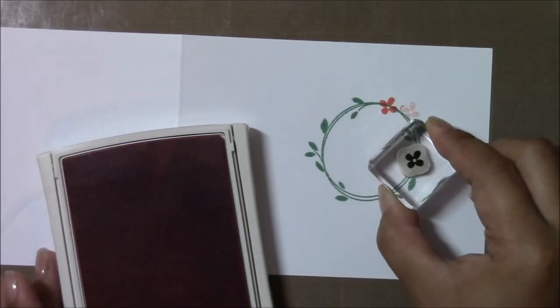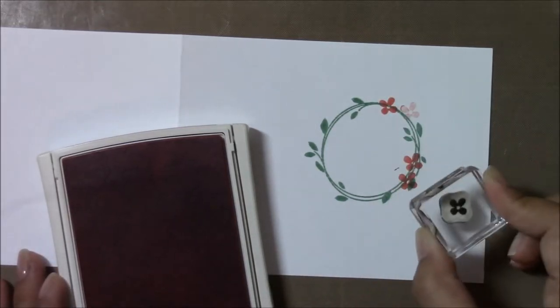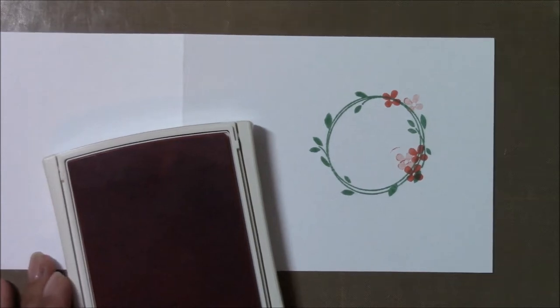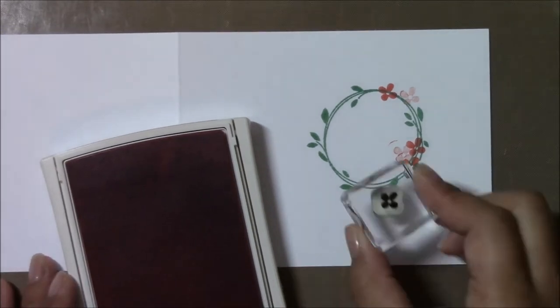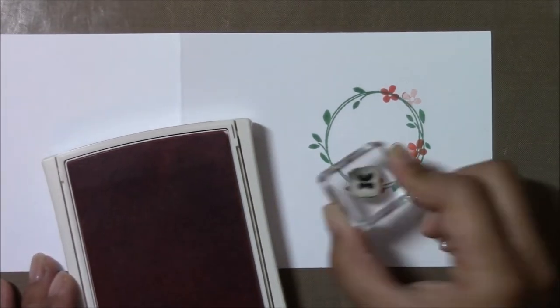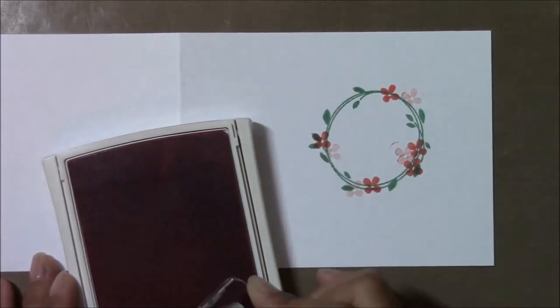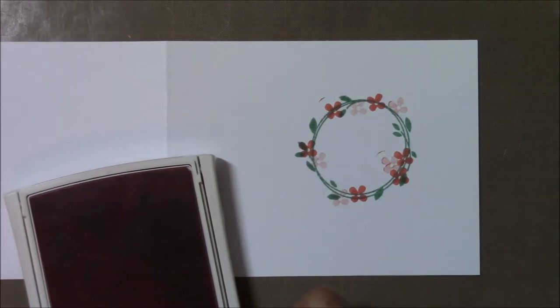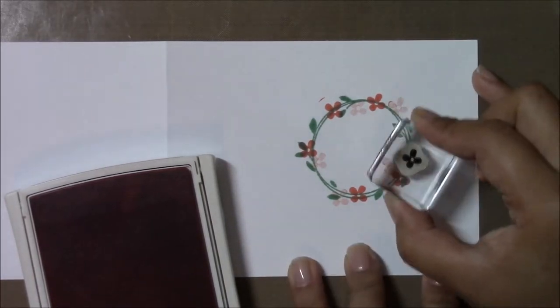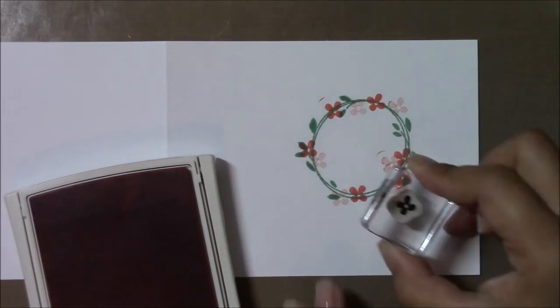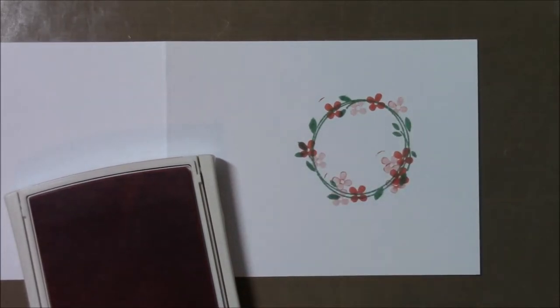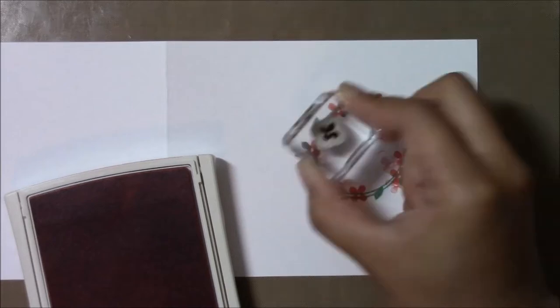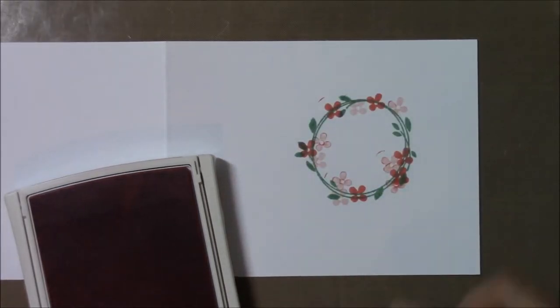This next color is called Crisp Cantaloupe, and it's been discontinued. It was a previous in-color and has been replaced by the new in-colors, but it's a pretty pink color as well. It's a little bit brighter than Blushing Bride, which is a current classic color by Stampin' Up. But I thought I'd use it since it's new to me and I've never used this color before. And as you can see there, I did press a little bit hard and got some ink on the stamp and transferred it onto my paper.